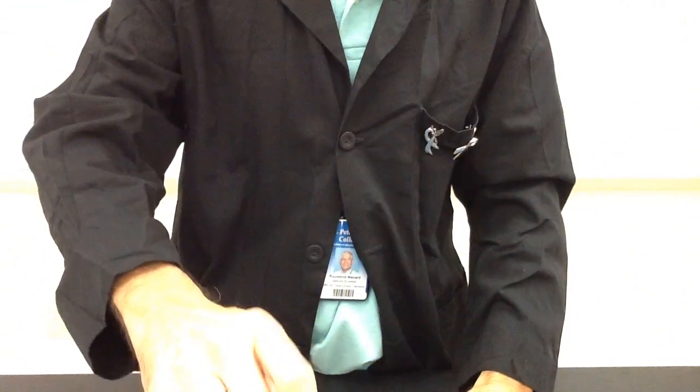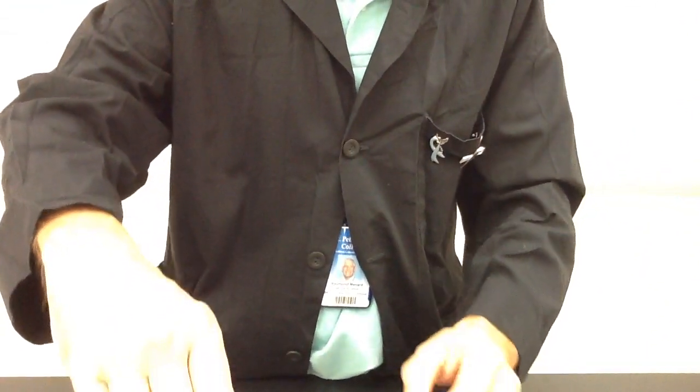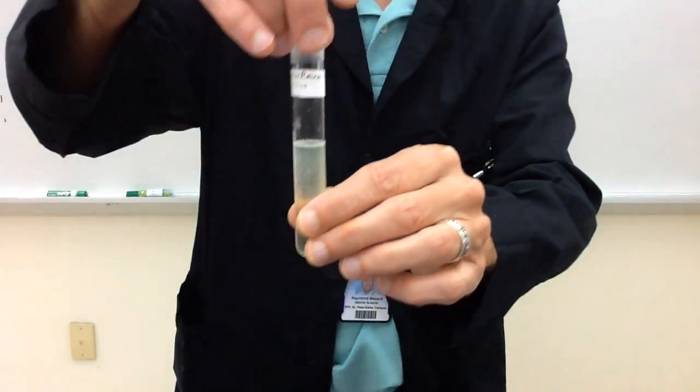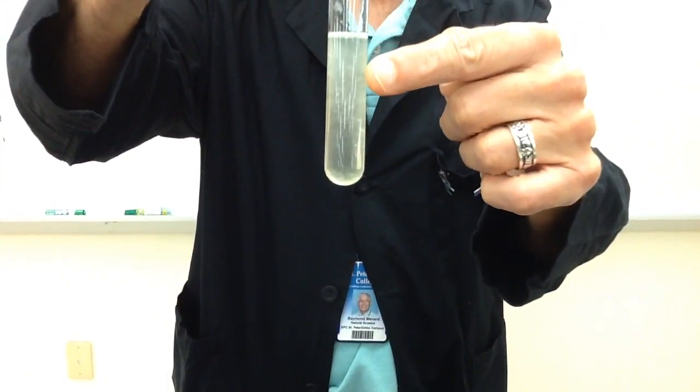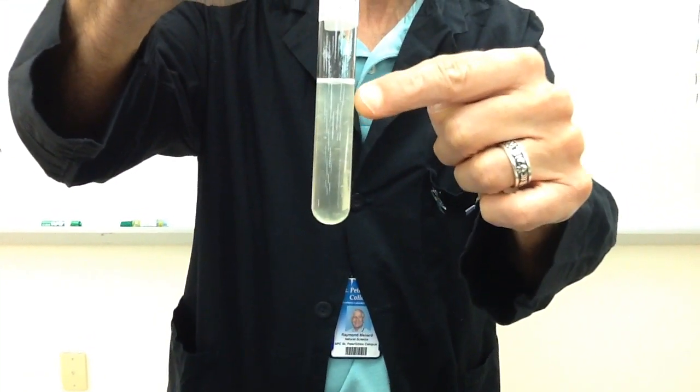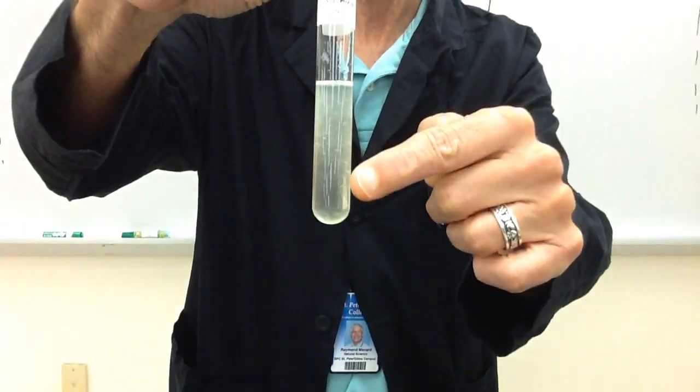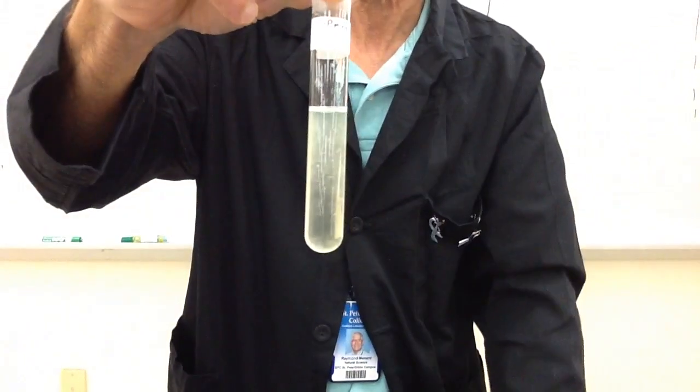The next one that we have is going to be a facultative anaerobe, and this is Proteus mirabilis. What you should see is that it grows a little heavier at the top, and then it starts to grow all the way down to the bottom of the tube.